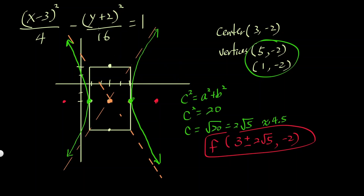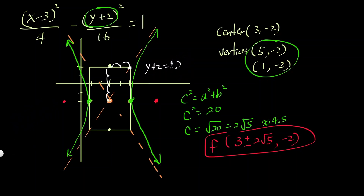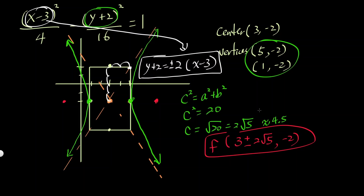For the equation of the asymptotes: take whatever y-term is there without the square and write it down. So y plus 2 equals plus or minus the slope times (x minus 3). The slope: we went up 4 and right 2 from the center, so 4 over 2 equals 2. The asymptote equations are y plus 2 equals plus or minus 2 times (x minus 3).